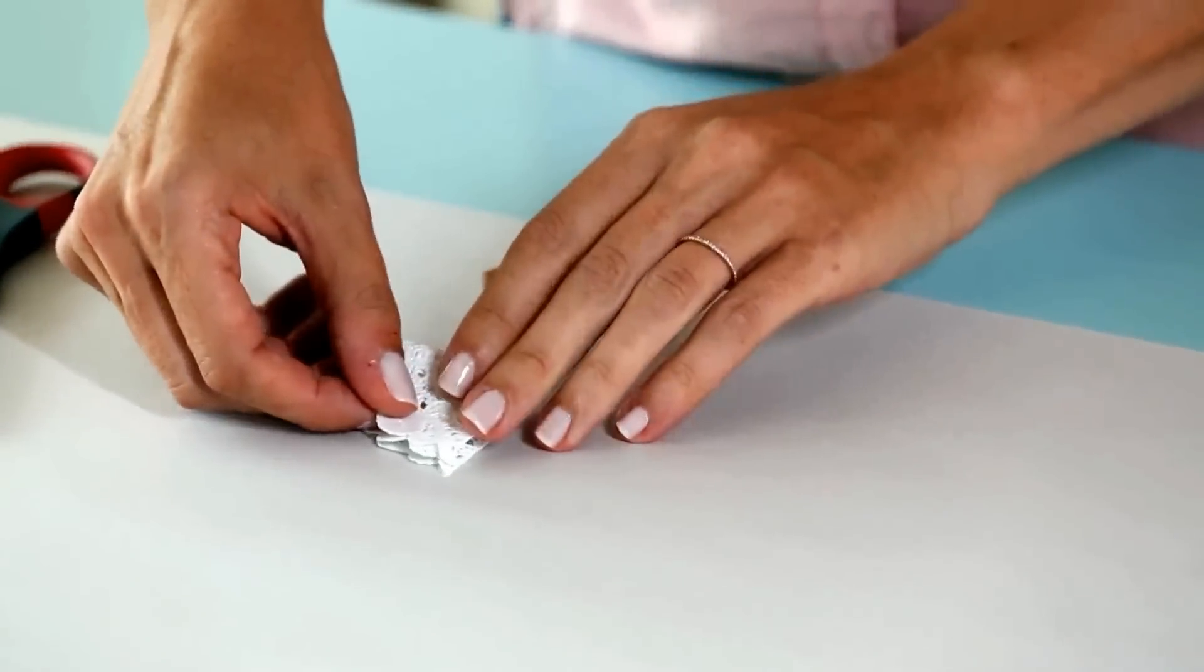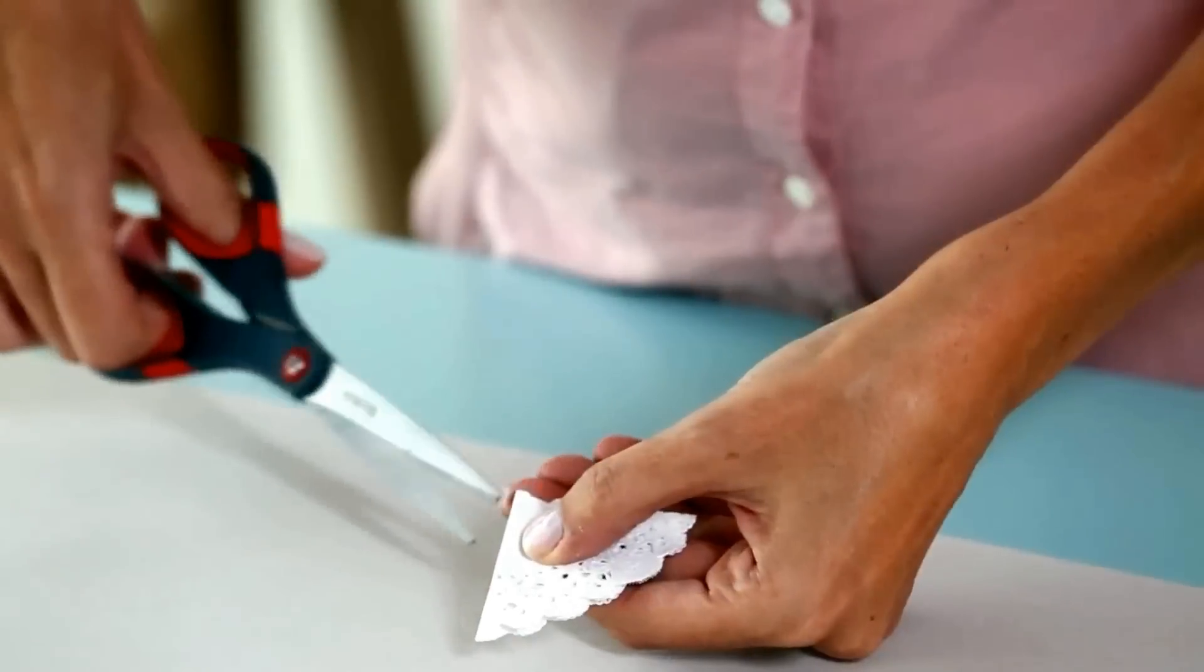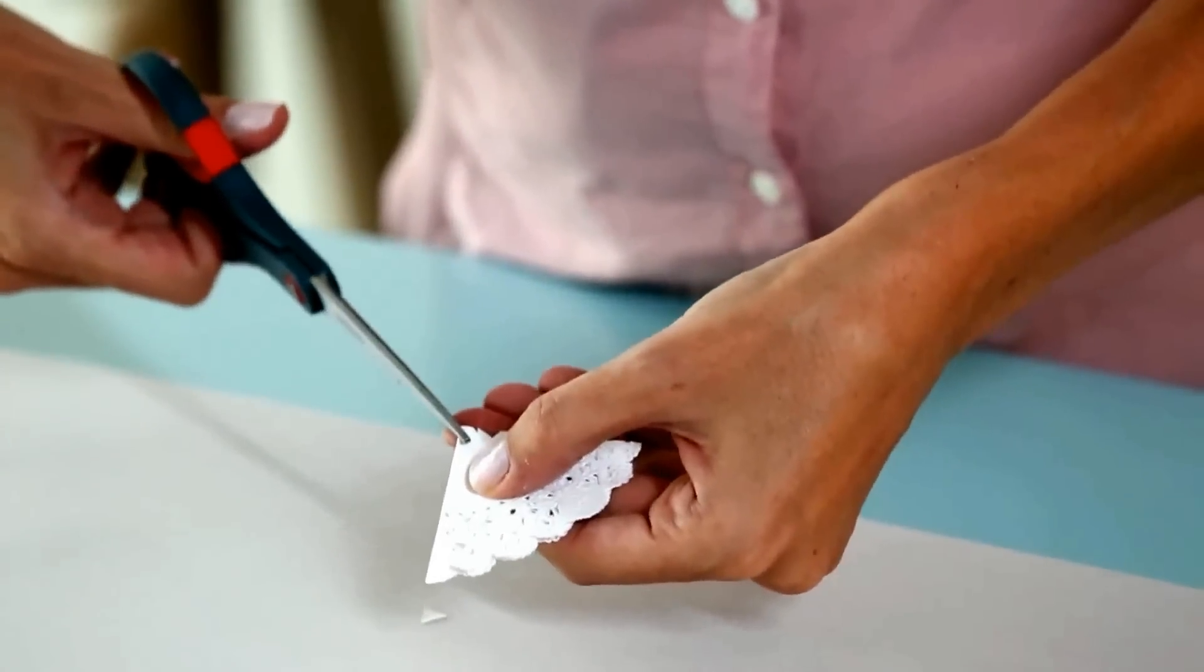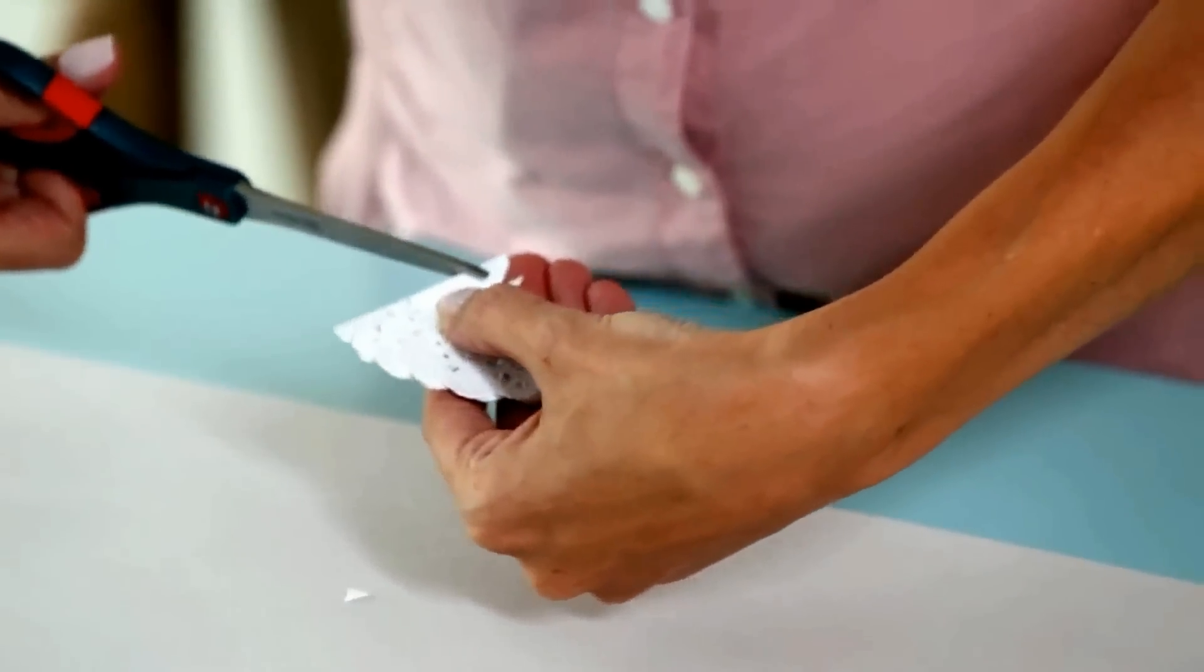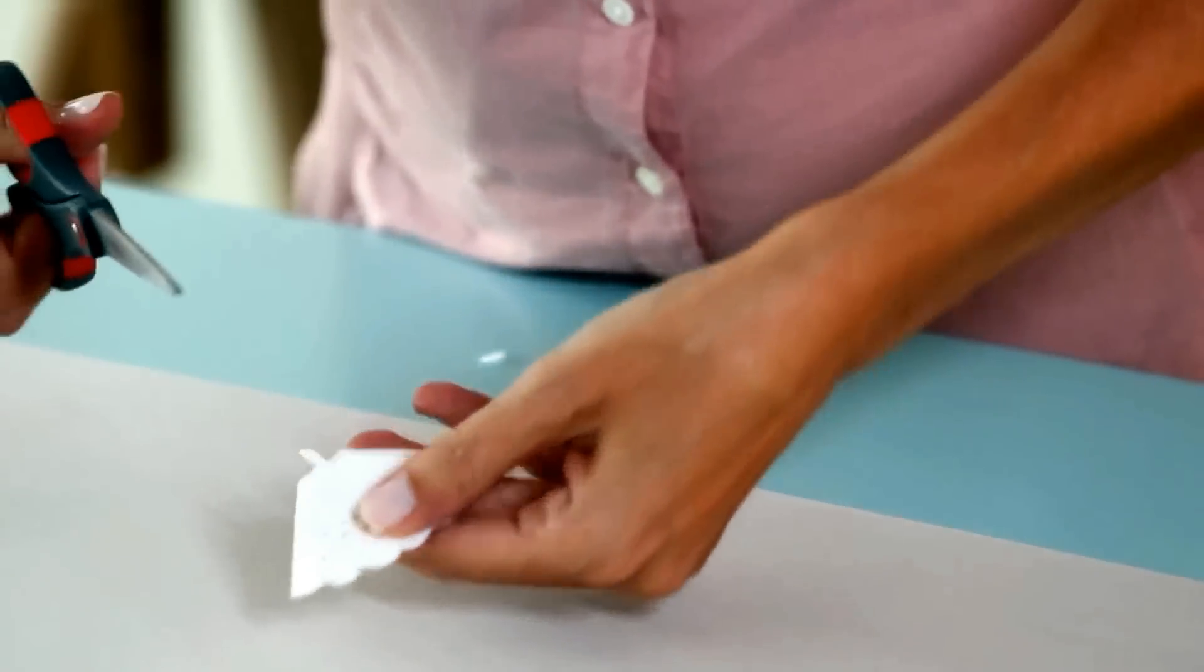To make the angel's body fold the doily into quarters. At the top point, trim with scissors to make shoulders and a narrower point so it can fit snugly into the bead. Just set that aside for now.